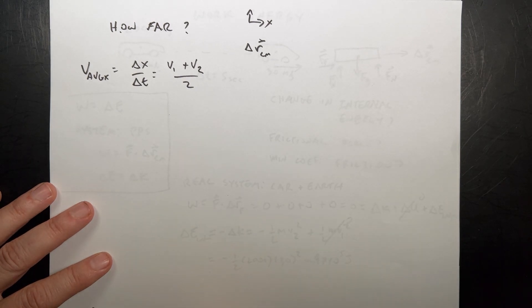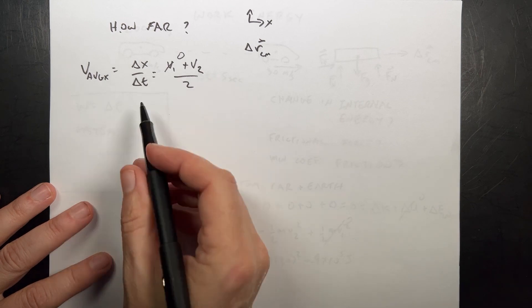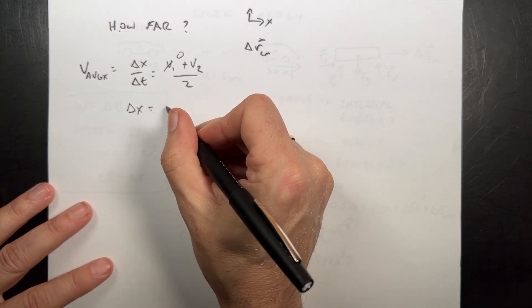But it's also equal to v1 plus v2 over 2. That's also the average velocity. And in this case, I know v1 is 0 and I know v2. And I want to solve for delta x.